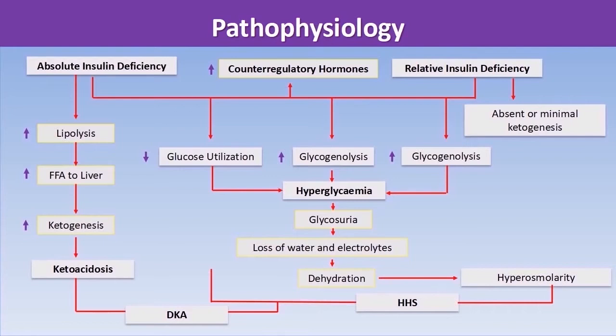This table summarizes the pathophysiology of DKA and HHS. Overall, DKA and HHS share some common pathophysiological processes, but what separates them depends on the cascade of events that happen subsequently. DKA and HHS typically occur when there is a triggering event leading to either absolute insulin deficiency, commonly observed in type 1 diabetic patients, or a state of relative insulin deficiency.